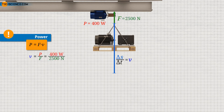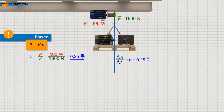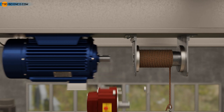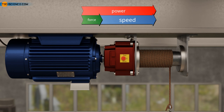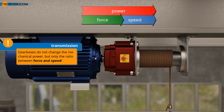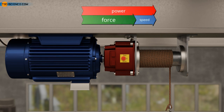For example, if a higher force of 2500 newtons is to be applied, a lifting speed of only 16 centimeters per second can be achieved with a maximum motor power of 400 watts. Conversely, with a lifting force of just 1600 newtons, the lifting speed can be increased to 25 centimeters per second. This is where gearboxes come in — they are used to control the power in favor of higher force or higher speed. It is not possible to increase both at the same time, as that would require an increase in power. The power is predetermined by the motor and cannot be changed by a gearbox.